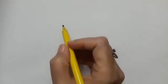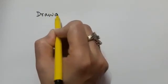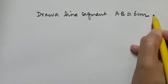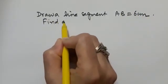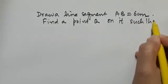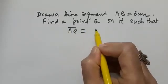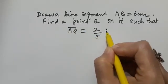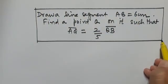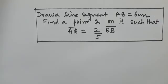Dear students, let us do one question based on construction. It says: draw a line segment AB equal to 6 centimeters and find a point Q on it such that AQ is 2/5 of QB. In this question we would be using our knowledge of dividing a line segment into a given number of equal parts.